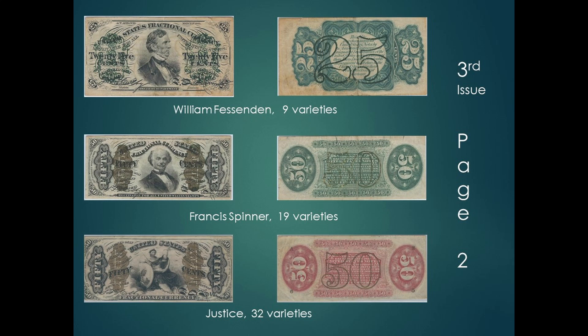Two other people were depicted on fractional currency during their lifetime: Francis E. Spinner, Treasurer of the United States, who died in 1890, and William P. Fessenden, who was a U.S. Senator and former Secretary of the Treasury. Their notes were put in circulation before the law was passed. The third note is an allegorical figure representing justice. Spinner is credited with developing the fractional currency idea, and he liked to experiment with making notes harder to counterfeit. Fractional notes were the first to use fiber paper, color-tinted paper, silk fibers, watermarked paper, and overprints to deter counterfeiters.